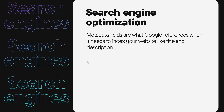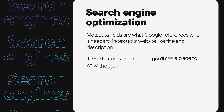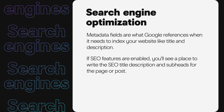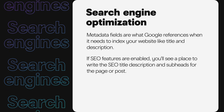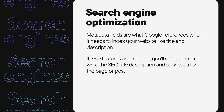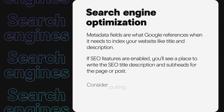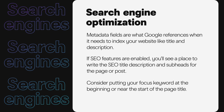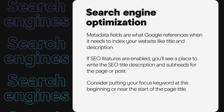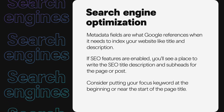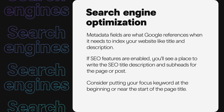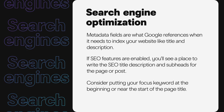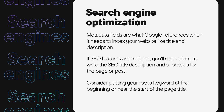These metadata fields are what Google references when it needs to index your website — like title and description. On your website, if SEO features are enabled, you'll see a place to write the SEO title, description, and subheads for the page or post. In most cases, visitors look at the page's SEO title and meta description displayed on the search result to determine whether they will click on the link and head to your website.